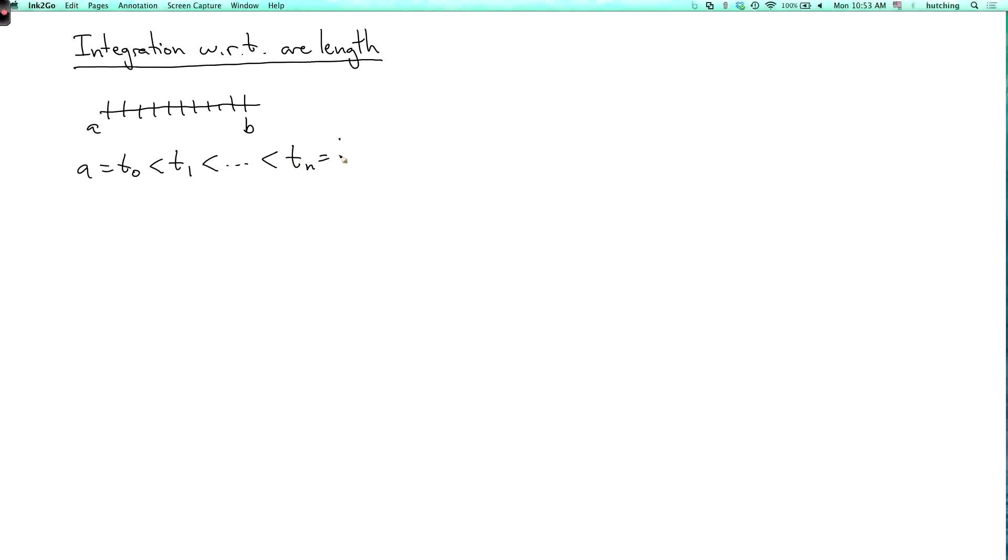And let's say these are equal. It's not really necessary, but that makes it a little simpler. So we'll say delta t equals ti minus ti minus 1 is b minus a over n.